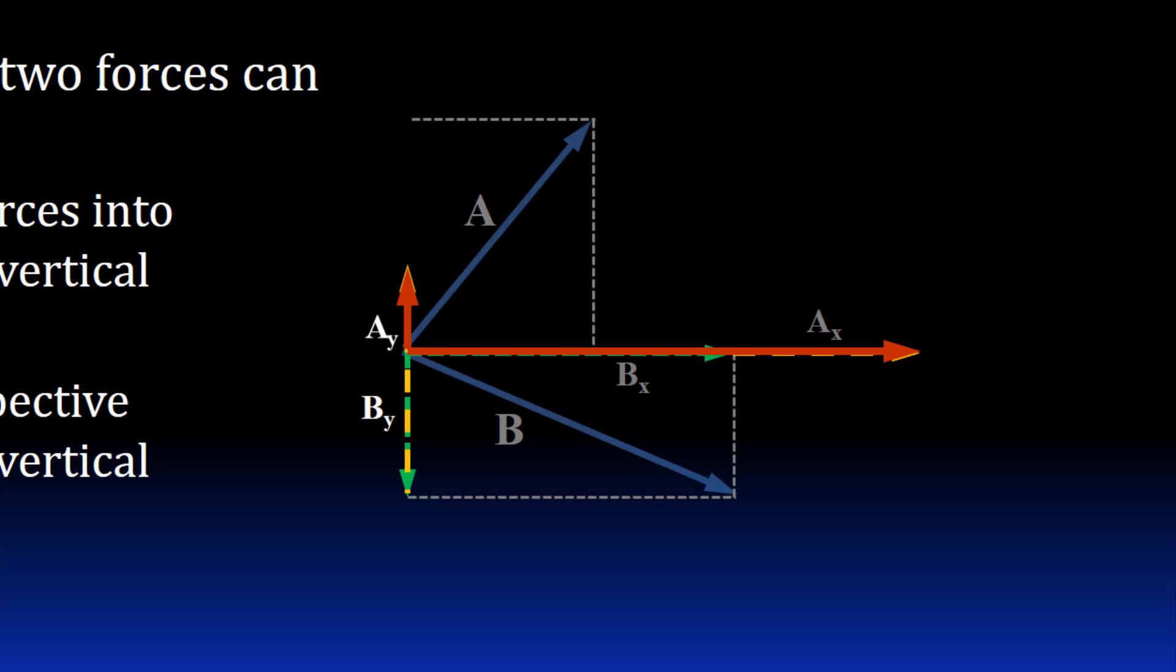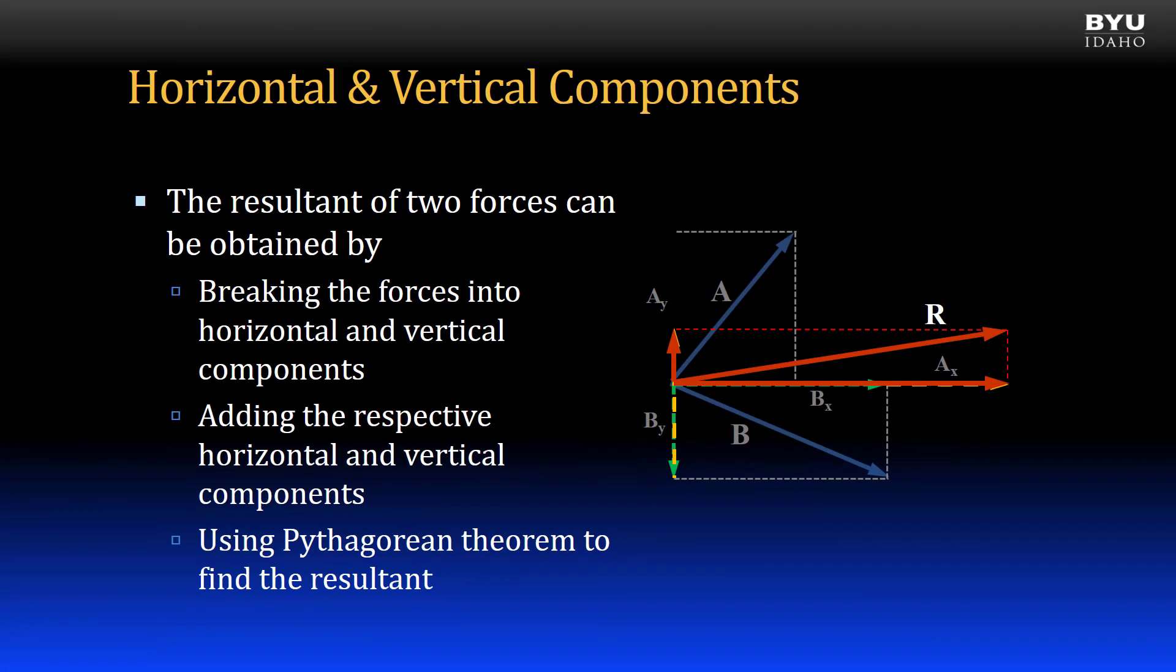To summarize, I've summed the X components and I've summed the Y components. The square root of the sum of the squares of the resultant components using the Pythagorean theorem will give me the resultant vector shown here.